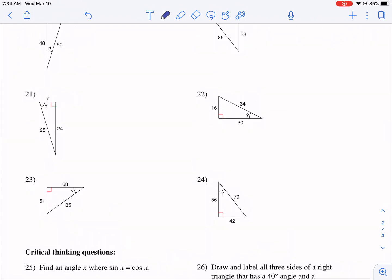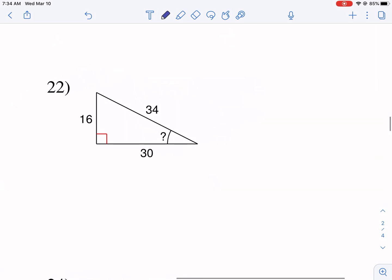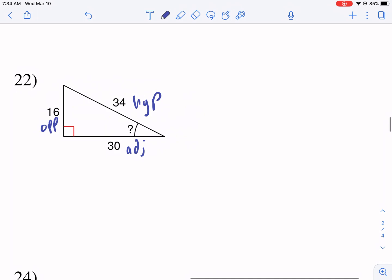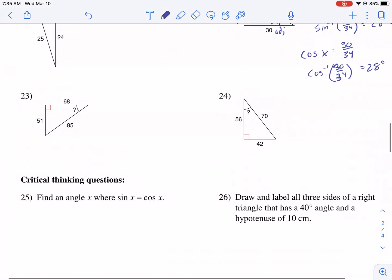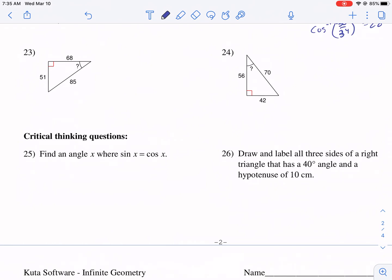And this is the same process for every one of these. This one, you can choose which function you can use because you have all the sides given. We have the opposite, adjacent, and hypotenuse. My favorite is sine, so I know sine of X equals 16 over 34. So I'm going to take inverse sine of 16 over 34. 16 divided by 34, that's 28 degrees equals X. But you could do cosine of X equals 30 over 34, and you're going to get the same thing. Inverse cosine of 30 over 34, and we get the same thing, 28 degrees.